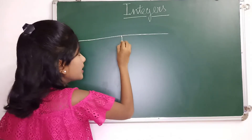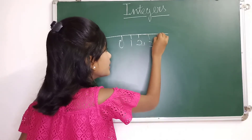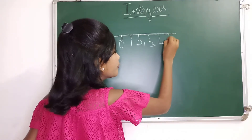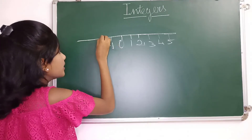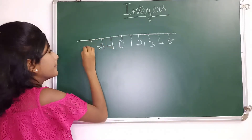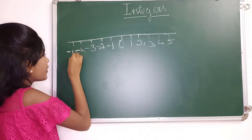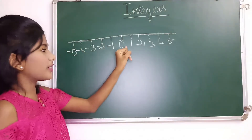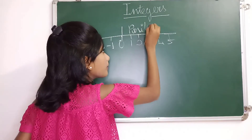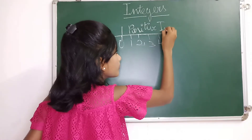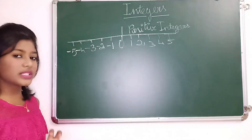I'm drawing a number line: 0, 1, 2, 3, 4, and 5 on the right side. The same on the left side: minus 1, minus 2, minus 3, minus 4, and minus 5. From 0, the right side numbers are called positive numbers — positive integers. And from 0, the left side numbers are called negative integers.